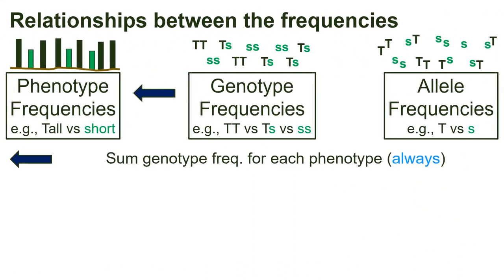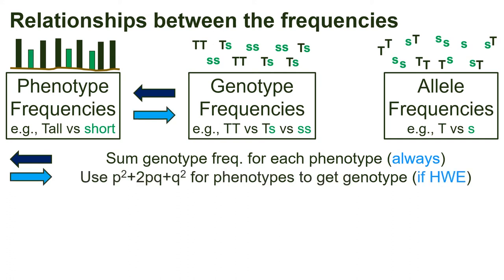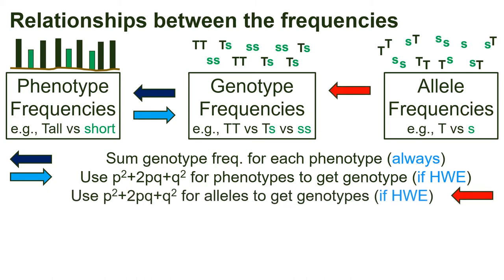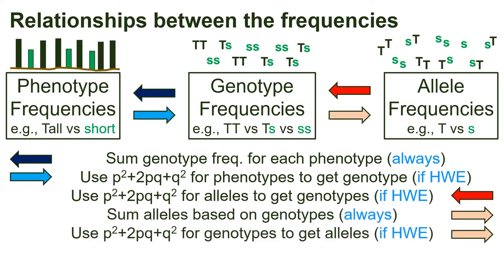To recap: we can get phenotype frequencies from genotype frequencies by summing the genotype frequencies that correspond to each phenotype, and this always works. We can get genotype frequencies from phenotype frequencies by using the homozygous phenotype frequencies to estimate allele frequencies, then use the P squared plus 2PQ plus Q squared relationship — but only if the population is at HWE. We can get genotype frequencies from allele frequencies using P squared plus 2PQ plus Q squared — only if at HWE. We can get allele frequencies from genotype frequencies by using the genotype frequencies directly, which always works, or by using P squared plus 2PQ plus Q squared if at HWE.